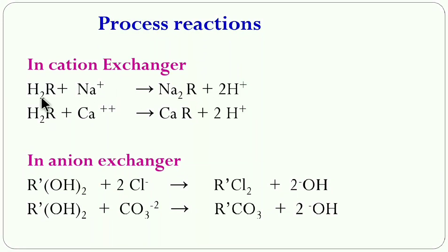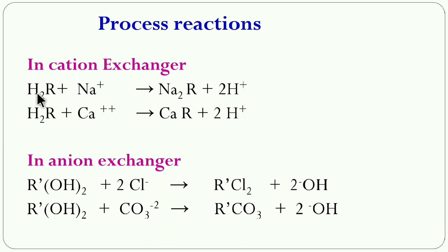In terms of reactions: cation exchanger resin H₂R reacts with Na⁺ ions to form Na₂R, releasing H⁺ ions into water. Similarly, H₂R reacts with Ca²⁺ ions to form CaR, releasing H⁺ ions. These reactions show that the resin captures heavy metal and other cations while releasing H⁺ ions — applicable to any cation present in water, whether or not it is responsible for hardness.